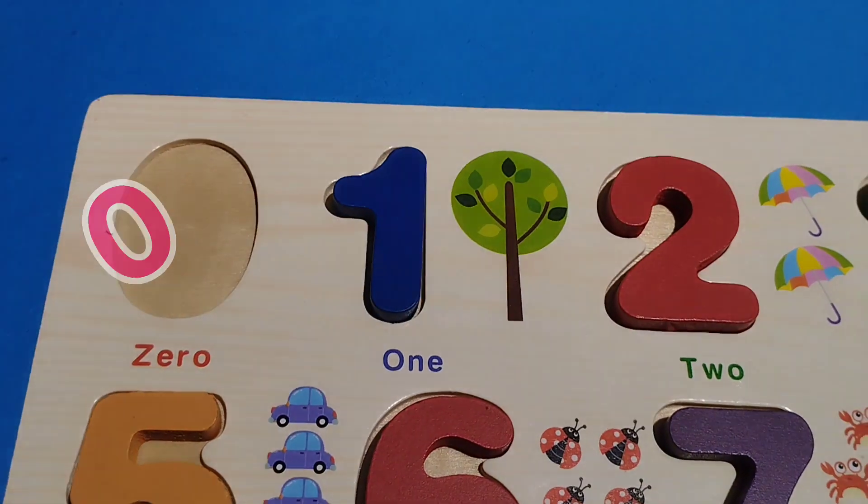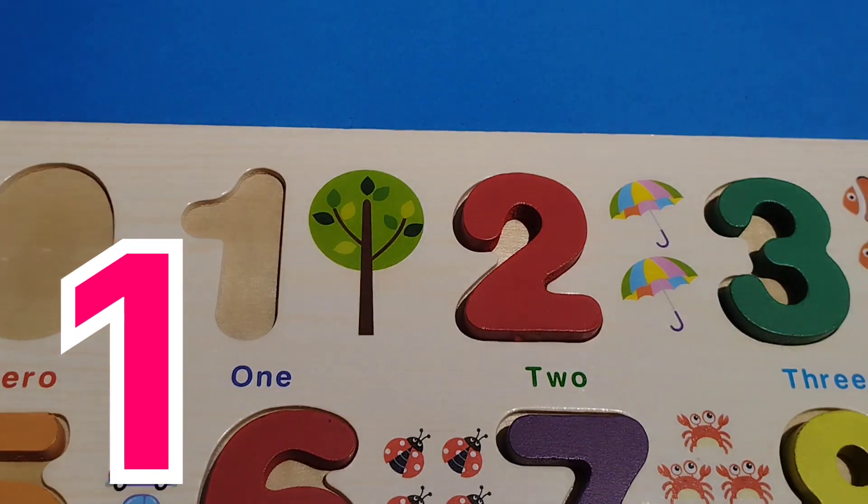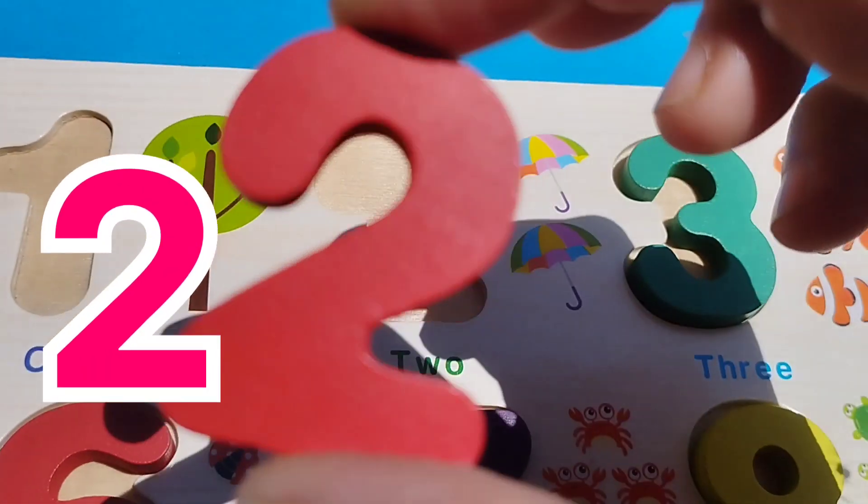Zero. The first number is one. Number one. Number two. This is number two.